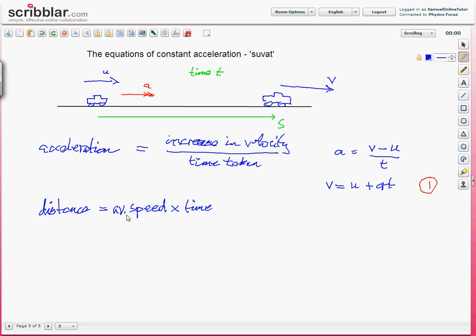the average speed times time. This gives us the equation distance s equals average speed. We start with u, we end with v. The average of two values is add the two together u plus v, divide by the number you have 2, multiplied by time. This gives us equation 2.